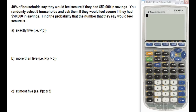We have a problem where 40% of households say they would feel secure if they had $50,000 in savings. In our study, we randomly select eight households and ask them if they would feel secure with $50,000 in savings. We want to find: Part A — exactly five households feel secure; Part B — more than five; and Part C — at most five.